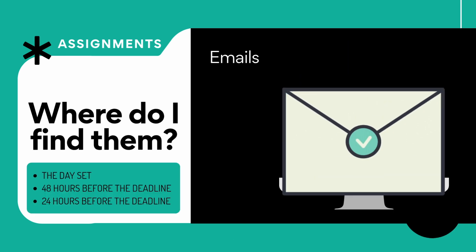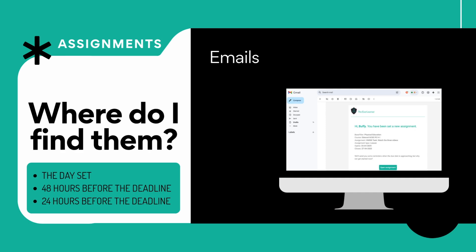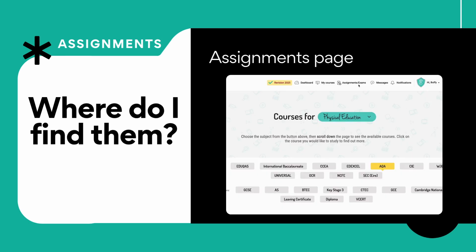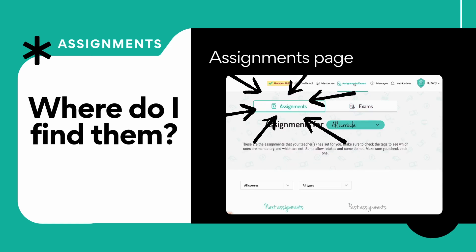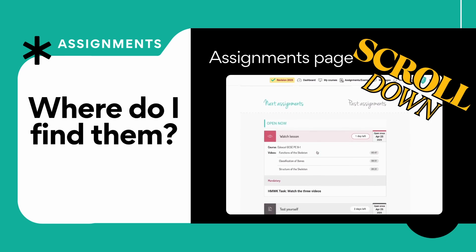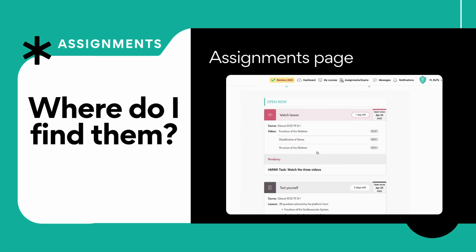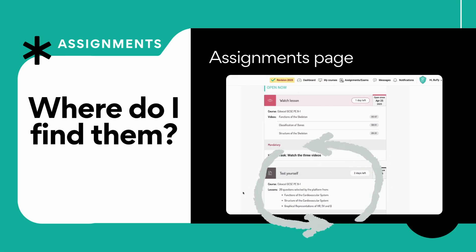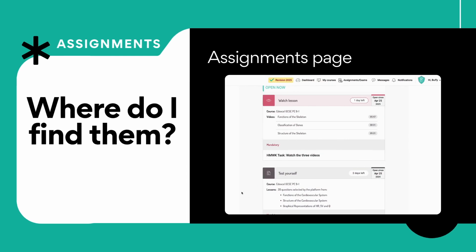Or you can go to your emails — here's a copy of an email received. You get them days before, 40 hours and 24 hours in advance. Or you can go to assignments, click on assignments, scroll down, and there's the watch lesson assignment. You can also see test yourself assignments — I've got quite a bit of homework to be doing.